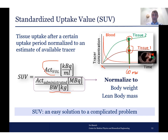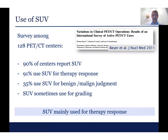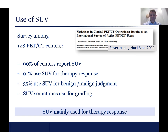The SUV is an easy solution to a complicated problem and it is widely used. A 2011 survey among 128 PET-CT centers found that 90% reported SUV values to patients, of which 90% used SUV for therapy response assessment — the main use of SUV to see if a therapy works or not quantitatively. Also, 30–35% of centers used SUV for distinguishing between malignant and benign disease.